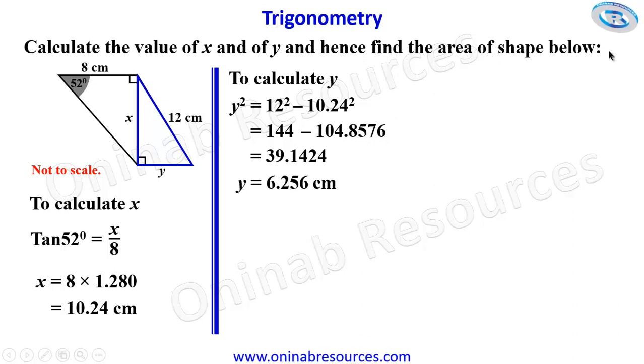And we are to calculate the area of the shape. So to calculate the area of the shape now, we are going to find the area of the large triangle and add it to the area of the small triangle. Remember, this is their common height, which is 10.24 centimeters.